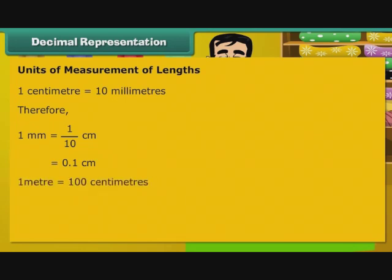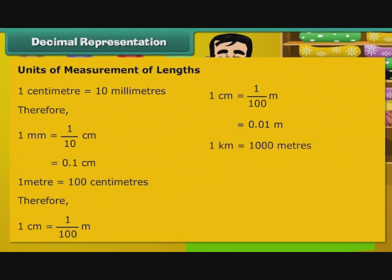1 m is equal to 100 cm. Therefore, 1 cm is equal to 1 by 100 m, that is equal to 0.01 m. 1 km is equal to 1000 m. Therefore, 1 m is equal to 1 by 1000 km, that is equal to 0.001 km.